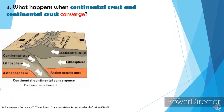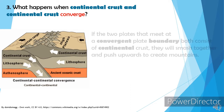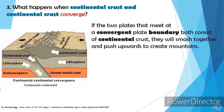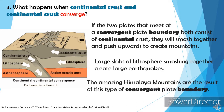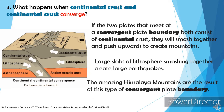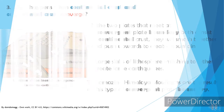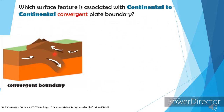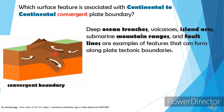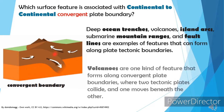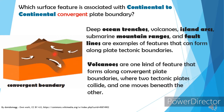What happens when continental crust and continental crust converge? If the two plates at a convergent boundary both consist of continental crust, they will smash together and push upward to create mountains. Large slabs of lithosphere pressing together create large earthquakes. The Himalayas are the result of this type of convergent plate boundary. Deep ocean trenches, volcanoes, island arcs, submarine mountain ranges, and fault lines are examples of features that form along plate tectonic boundaries.